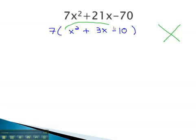Using the AC method, 1 times -10 is -10, and we want to add to 3. This is possible with 5 and 2 if the 2 is negative.